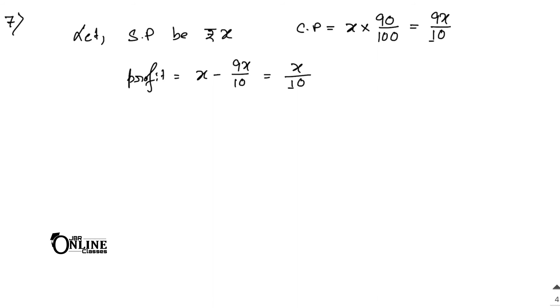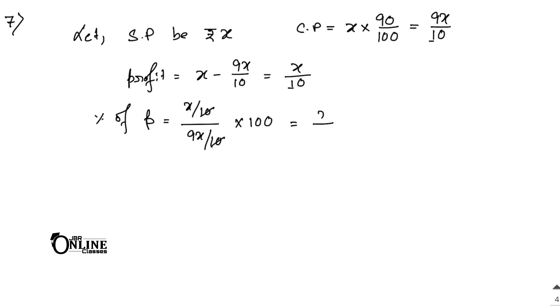Percentage of profit equals (SP minus CP) divided by CP, into 100. That is (x/10) divided by (9x/10), into 100. The 10s cancel and the x's cancel, giving 100 by 9, which equals approximately 11.1%. So the profit percentage is approximately 11.1%.